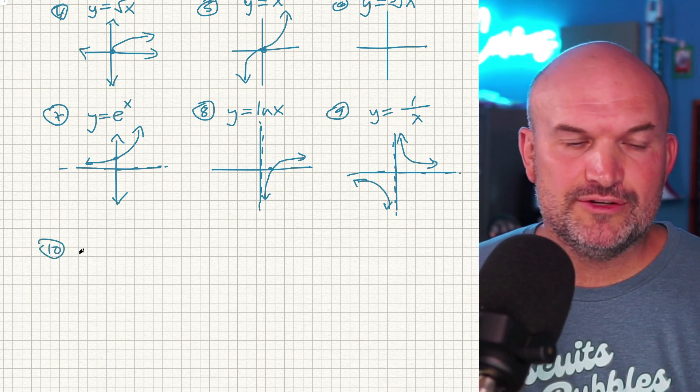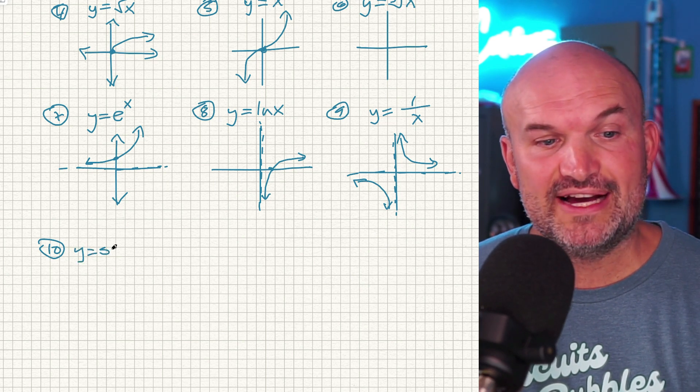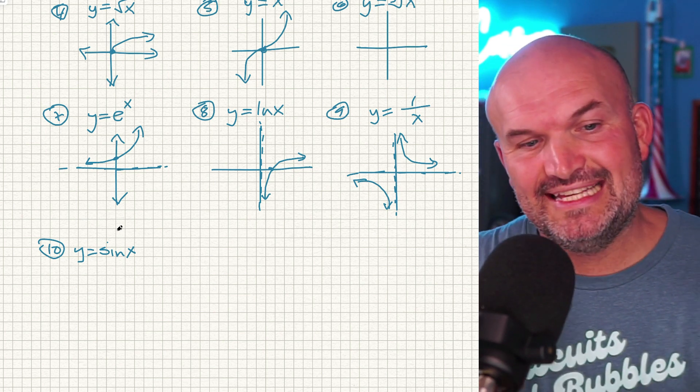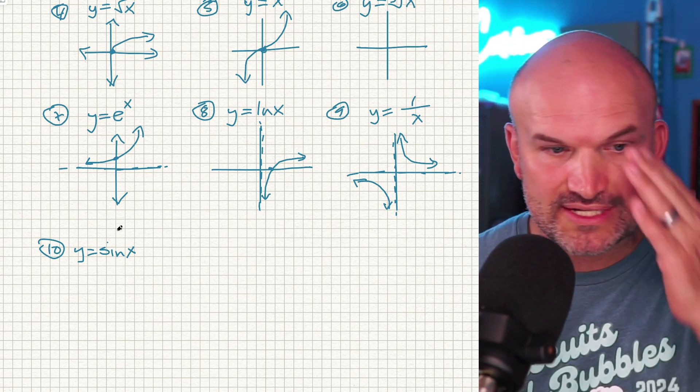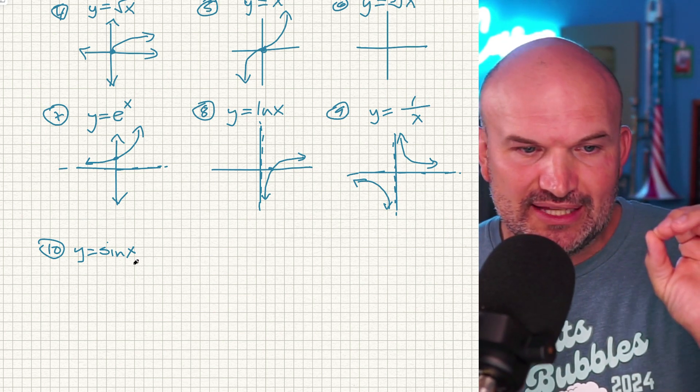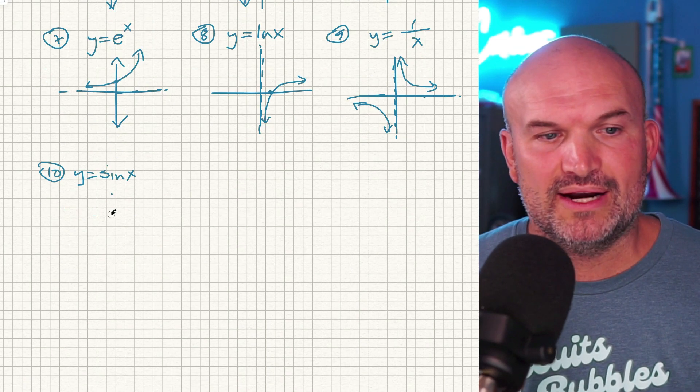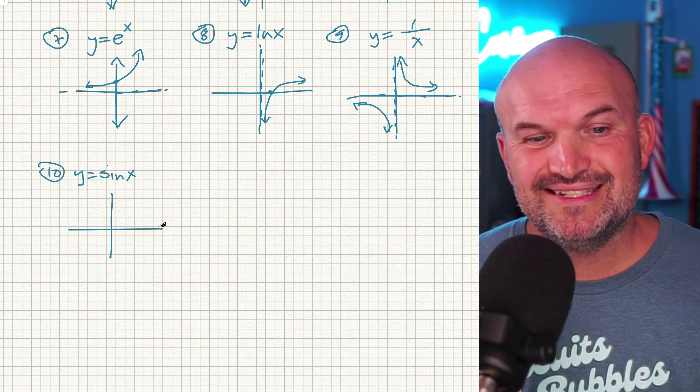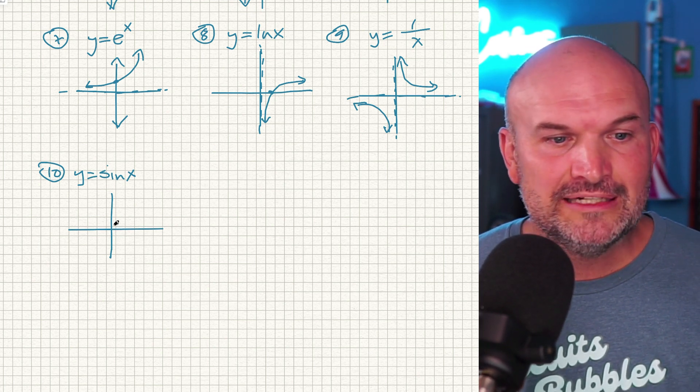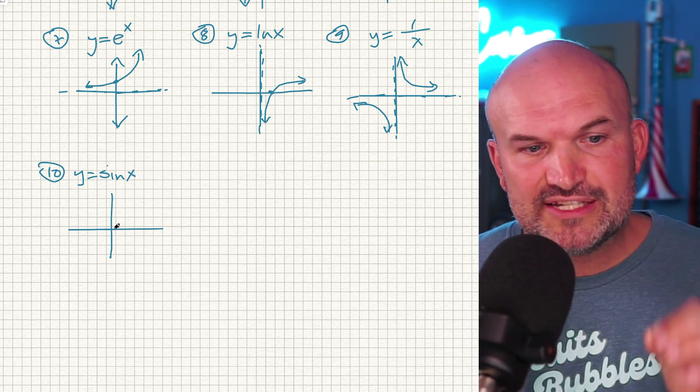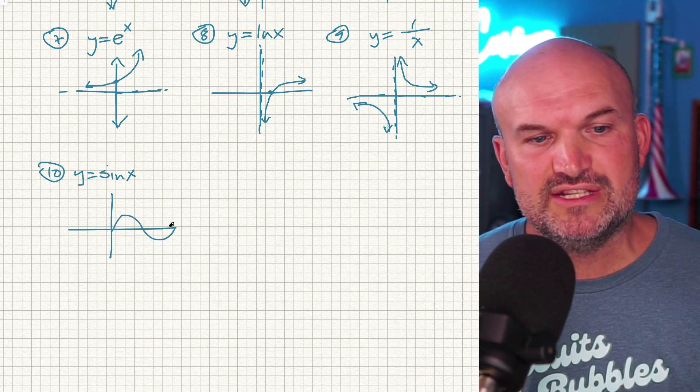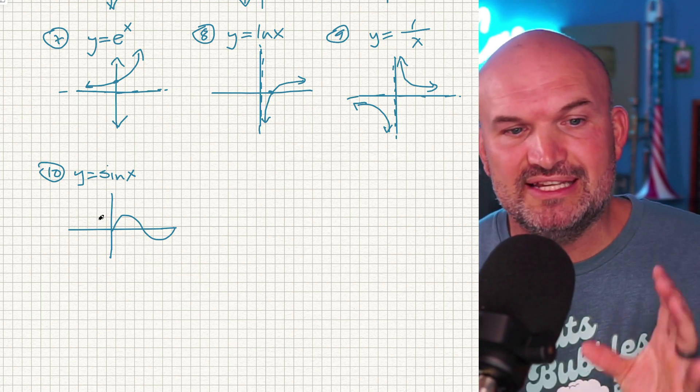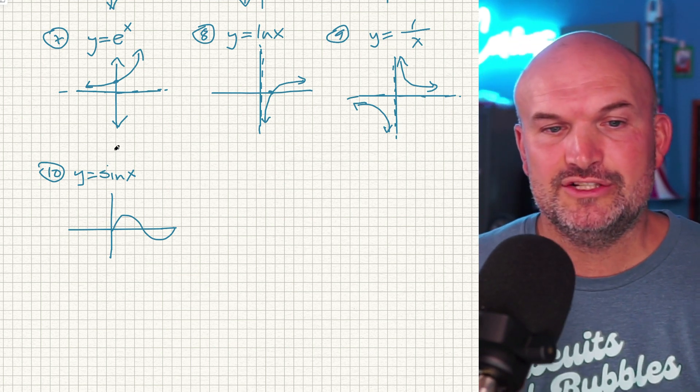Number 10 is going to be sine of x. So in pre-calculus, a lot of times we deal with the trigonometric functions at kind of like the middle of the course. So I'm not going to get into the nuances of how to graph this and we're not going to get any characteristics. I just want to show you a rough sketch of what this graph looks like because it is completely different than what we have covered up to this point. So this graph is going to look something like this. And this is just going to be one period of this graph. This graph actually continues this same pattern infinitely to the left and infinitely to the right.